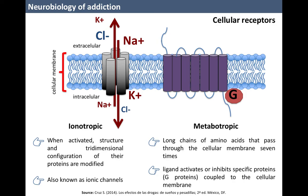Metabotropic receptors are formed by long chains of amino acids that pass seven times through the cellular membrane. The interaction with their ligand activates or inhibits specific proteins, like G proteins, linked to the cellular membrane, which are involved in the production of other molecules such as cyclic AMP.